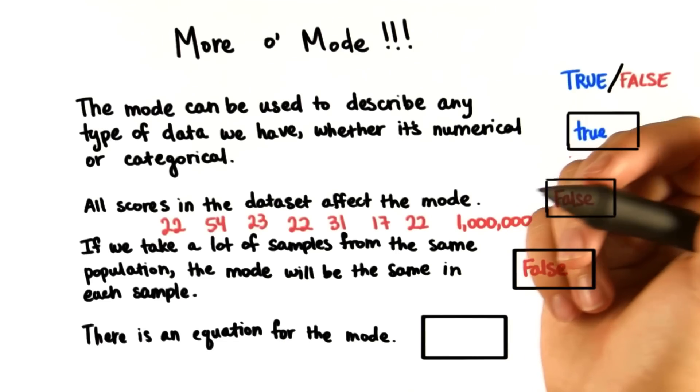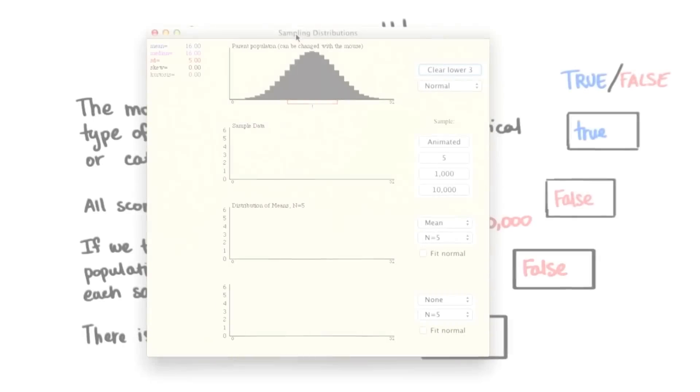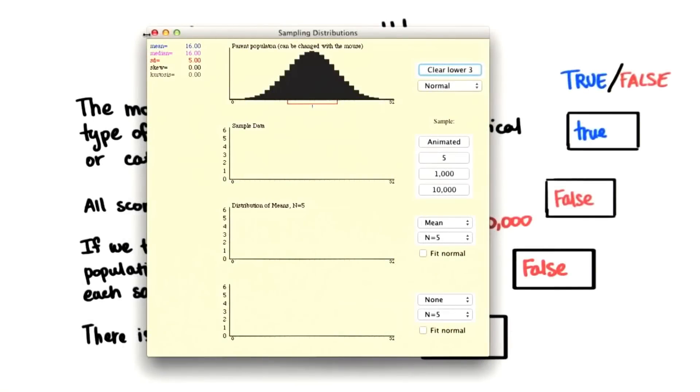If we take a bunch of samples from a population, the mode is likely to change from sample to sample. Let's illustrate this idea with this applet. It's really cool.